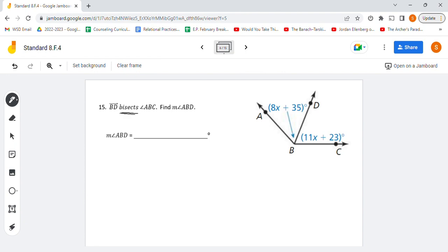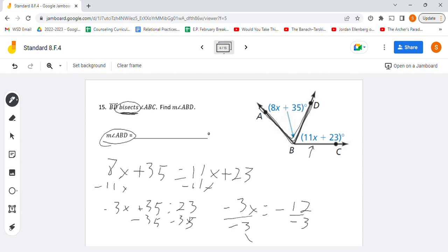On this next one we're going to use the definition of the word bisect. That means that this angle and this angle are the same measure because this BD has cut the large angle in half. That will allow us to set up an equation, and we are going to use the same strategy as before, where we find the value for X and then plug it in. The angle we're looking for is ABD, so that would be ABD, this angle right here. Setting up the equation we have 8X plus 35 equals 11X plus 23. We can set those equal to each other again because the word bisect means that we've cut it exactly in half. Solving this, we'll subtract 11X onto this side. We end up with negative 3X plus 35 equals 23. Subtract that 35, and we end up with negative 3X equals negative 12. Finish this out by dividing by negative 3, and we get X equals positive 4.